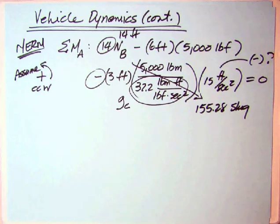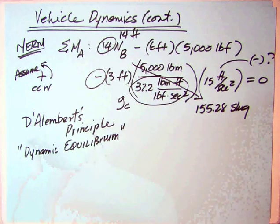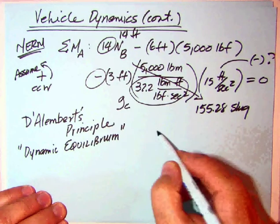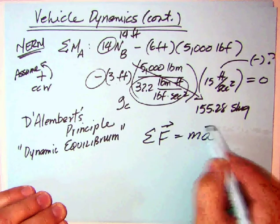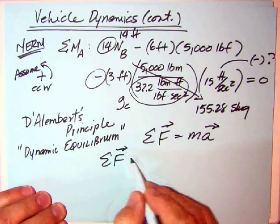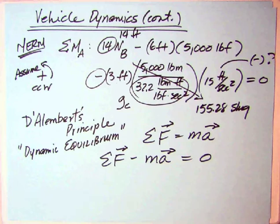So what is going on? What the MERM is looking at is referred to as D'Alembert's Principle. He came up with this concept of dynamic equilibrium. He took Newton's second law, F equals MA, and took the MA to the left-hand side, essentially turning dynamics problems into statics problems.